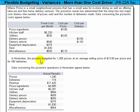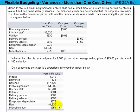In November, the pizzeria budgeted for 1,200 pizzas at an average selling price of $13.50 per pizza and 180 deliveries. The actual results came in as shown on screen, so we've got all this information to work with.